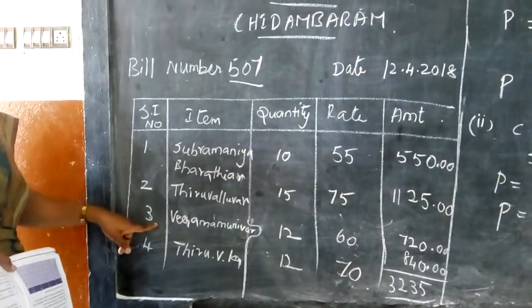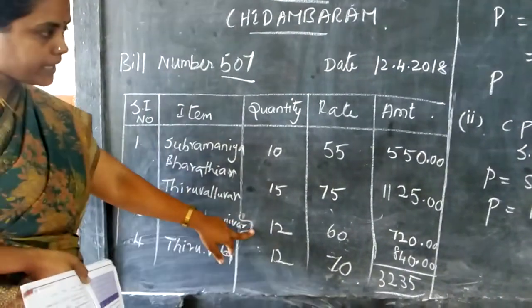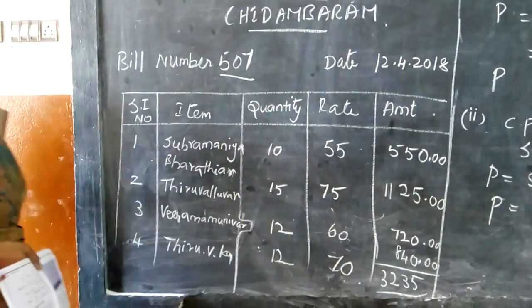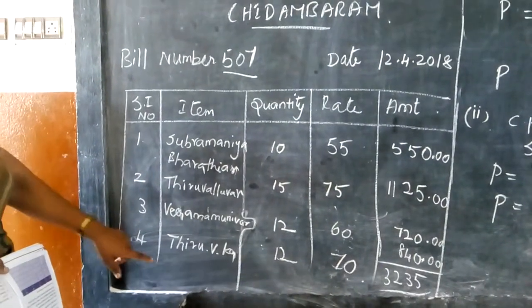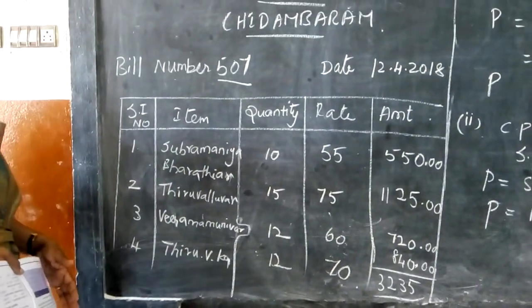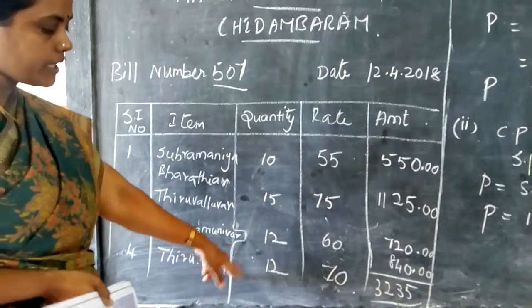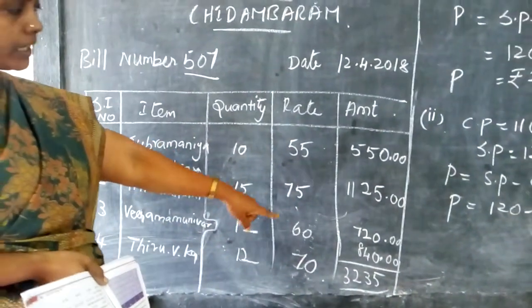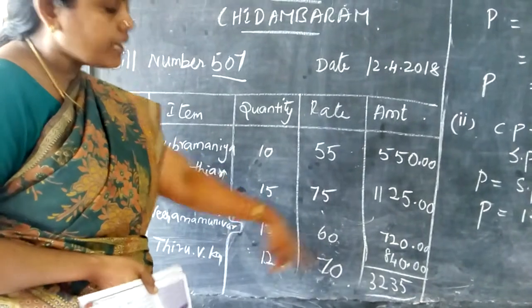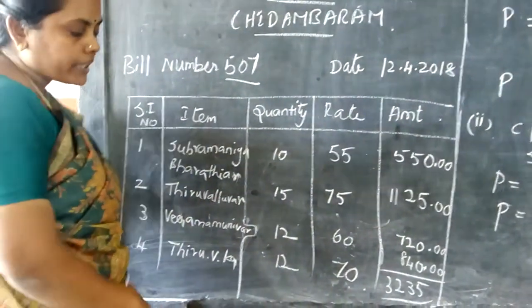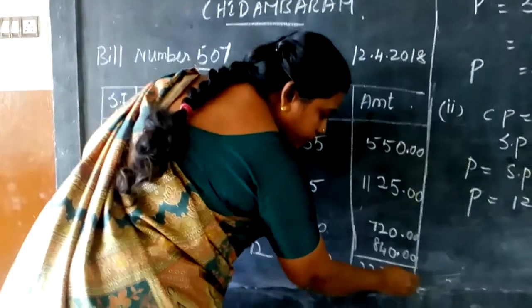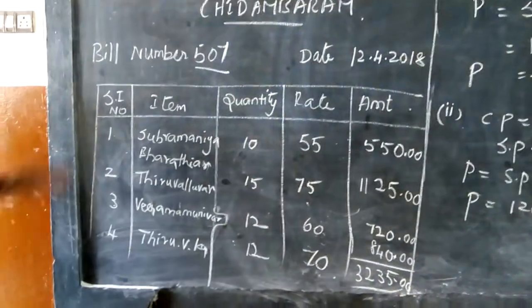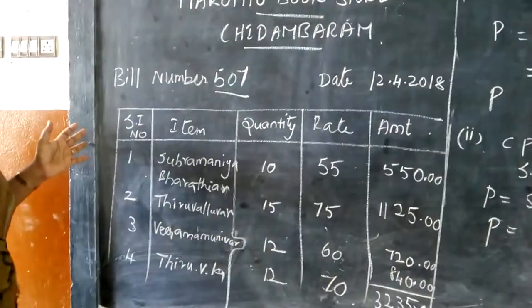And third one is Dhiramam liver. The quantity is 12 and the rate is 60. So 12 into 60 is 720. And the last is Thiruvika, 12 quantity and the rate of 70. So 12 into 70 is 840. By adding all these things, we are getting 3235 rupees. So this is the cash bill which we are following over here.